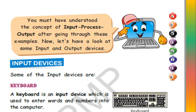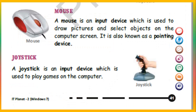Some of the input devices are: Keyboard — a keyboard is an input device which is used to enter words and numbers into the computer. Mouse — a mouse is an input device which is used to draw pictures and select objects on the computer screen. It is also known as a pointing device.